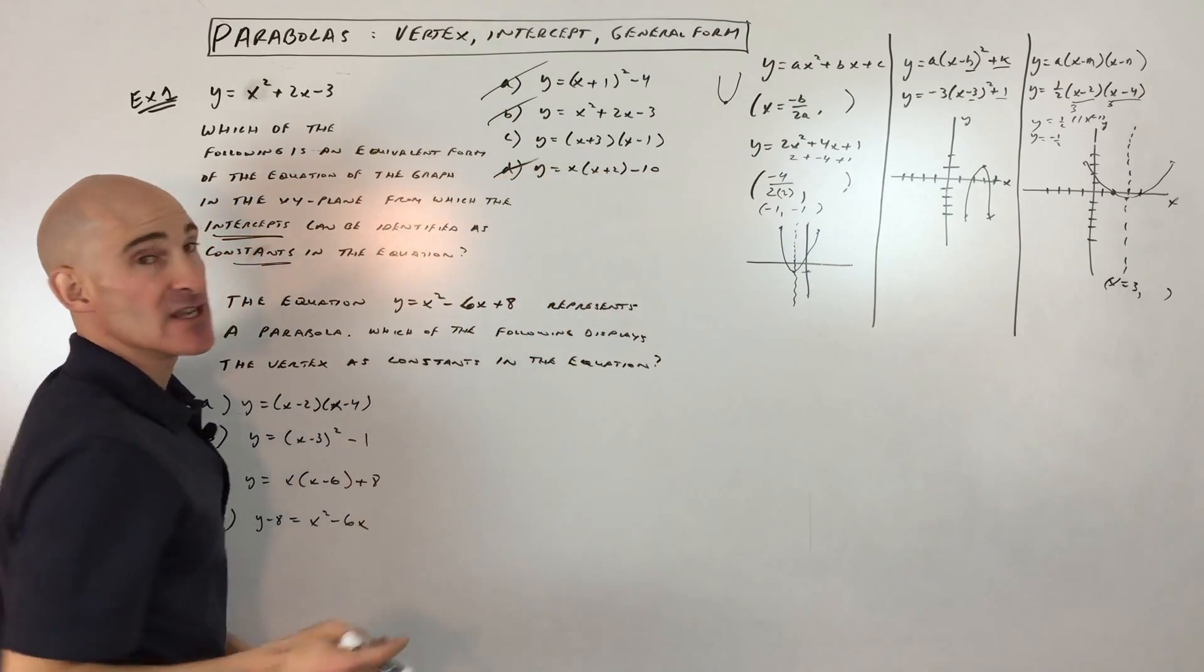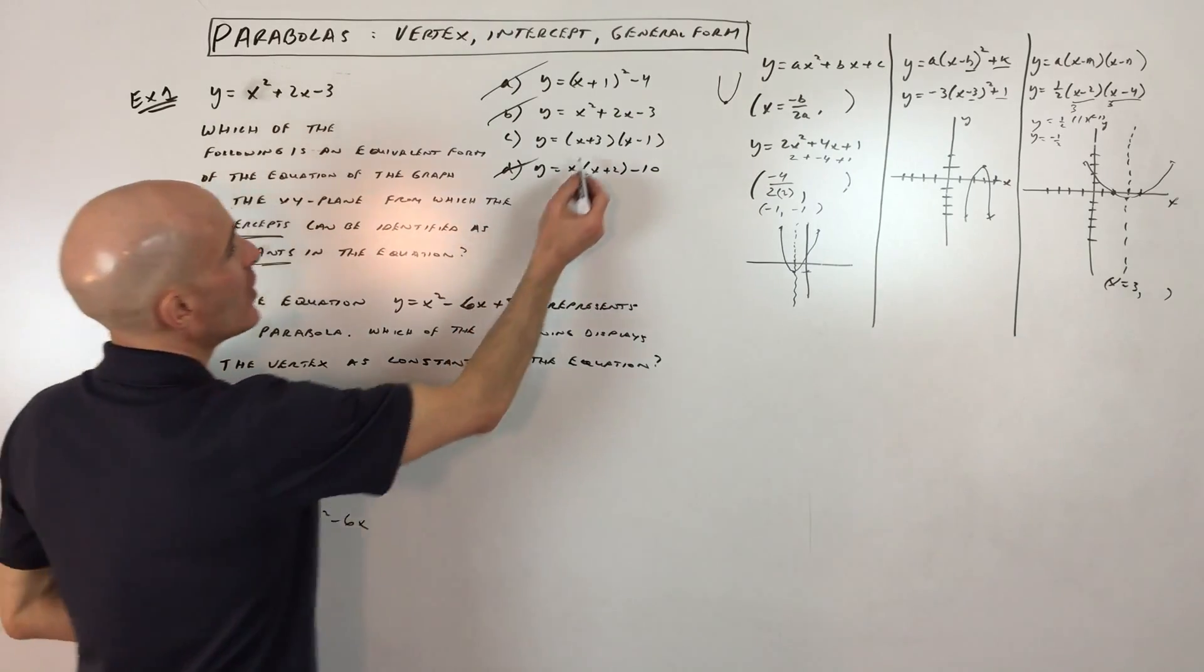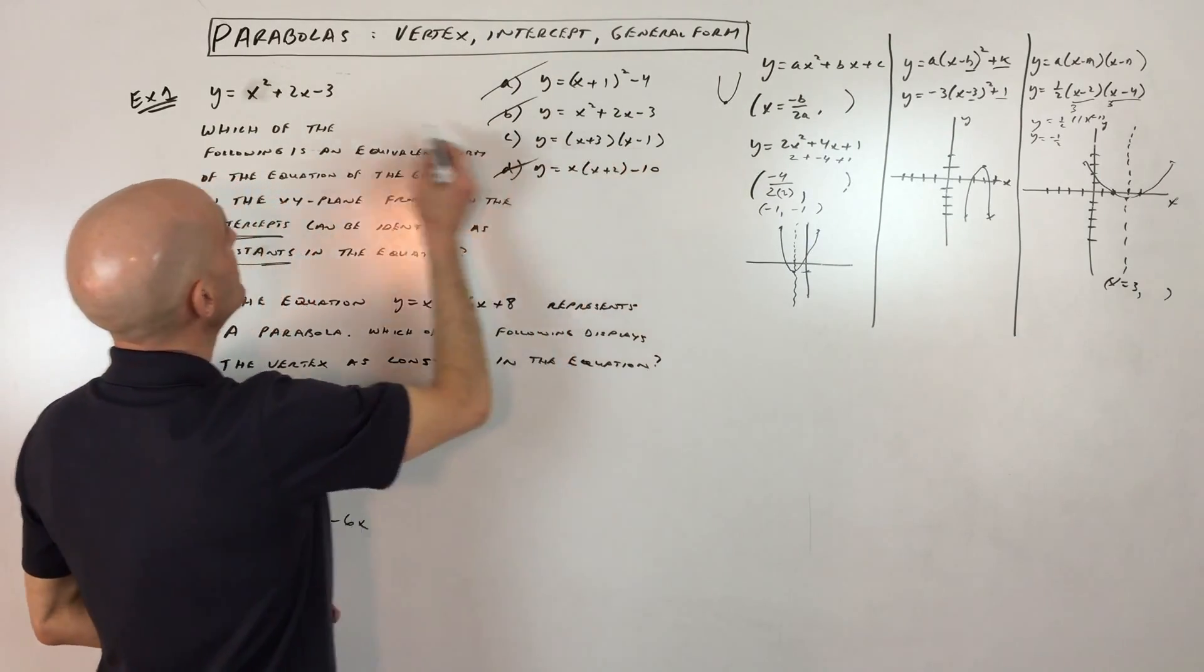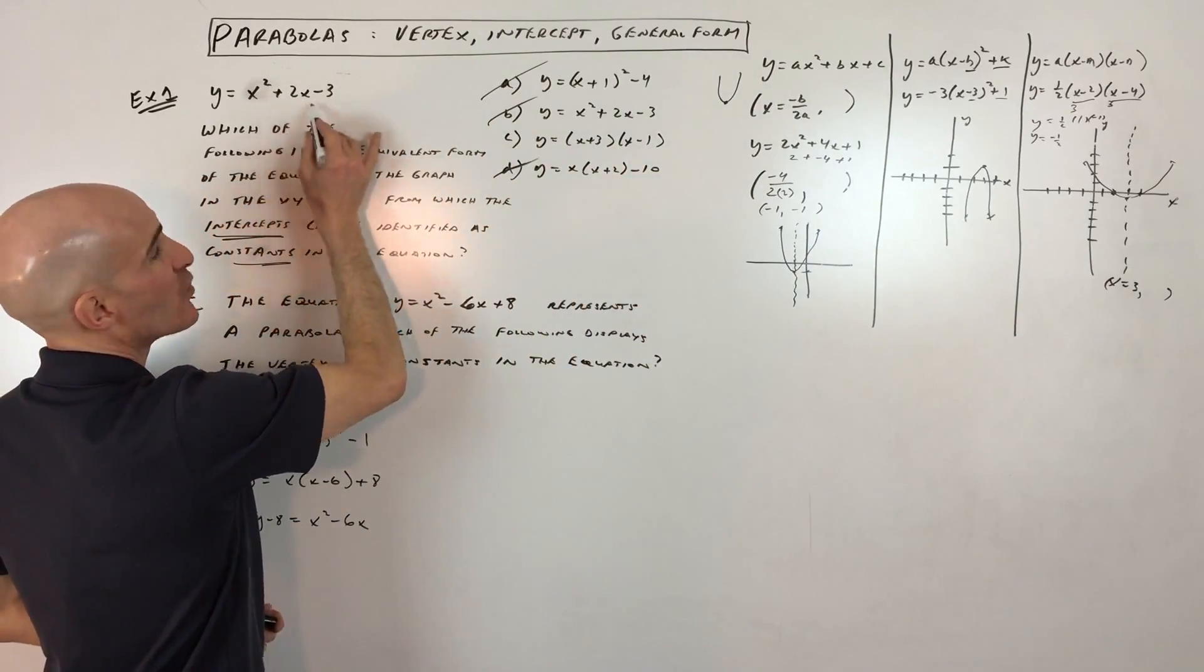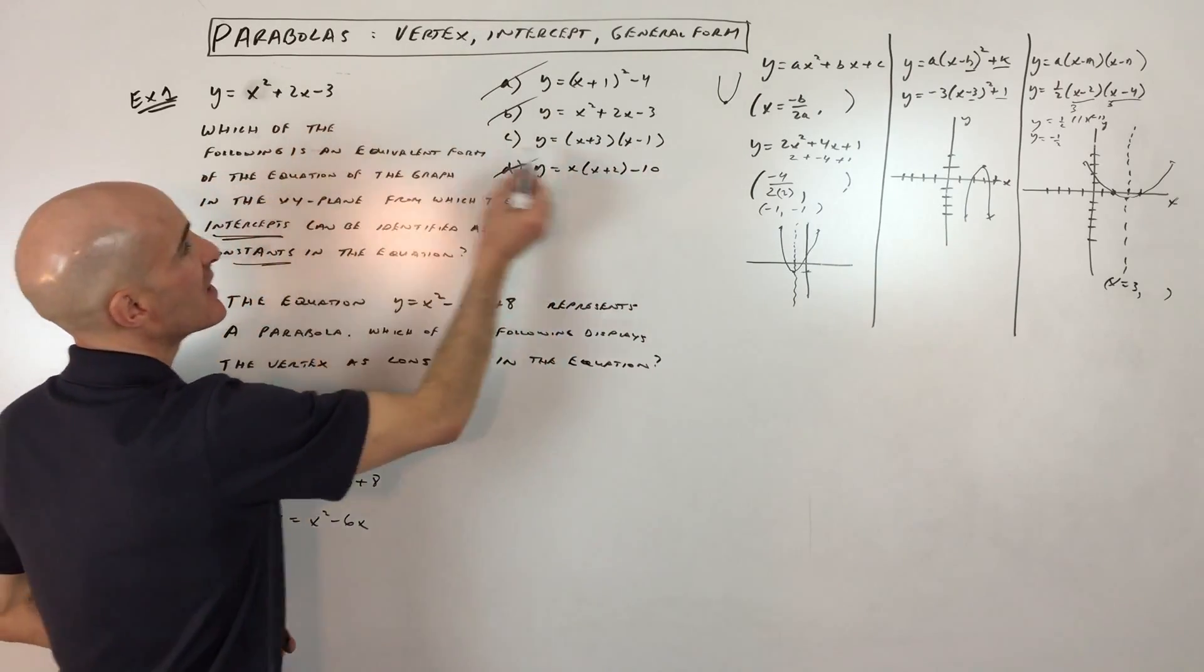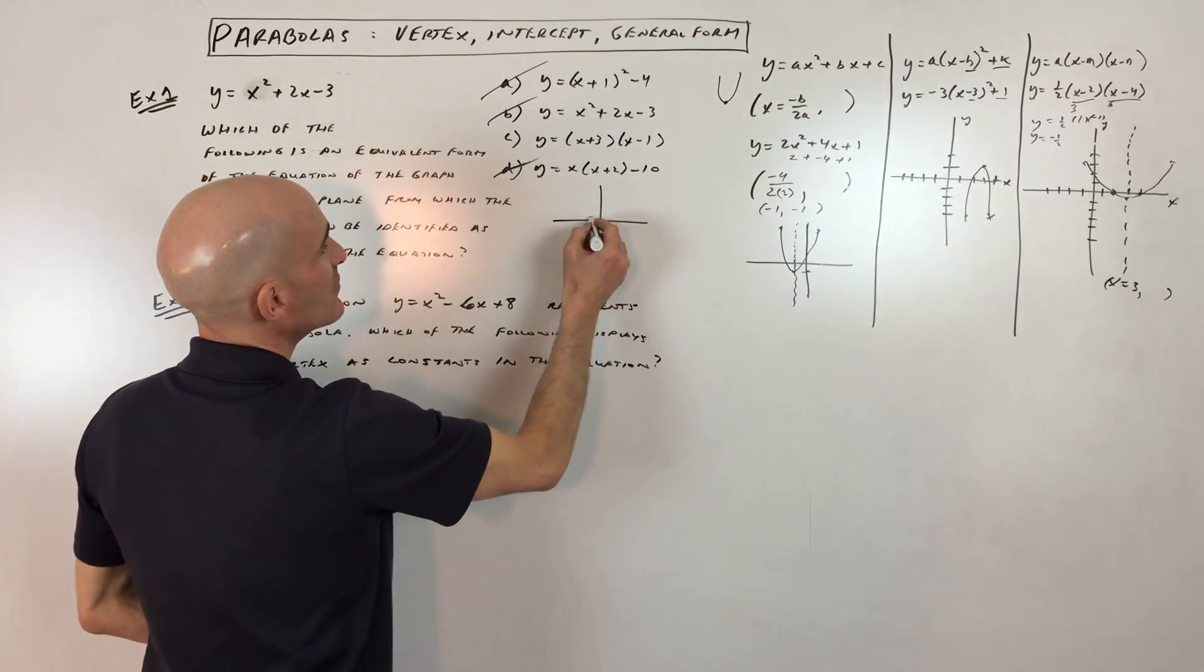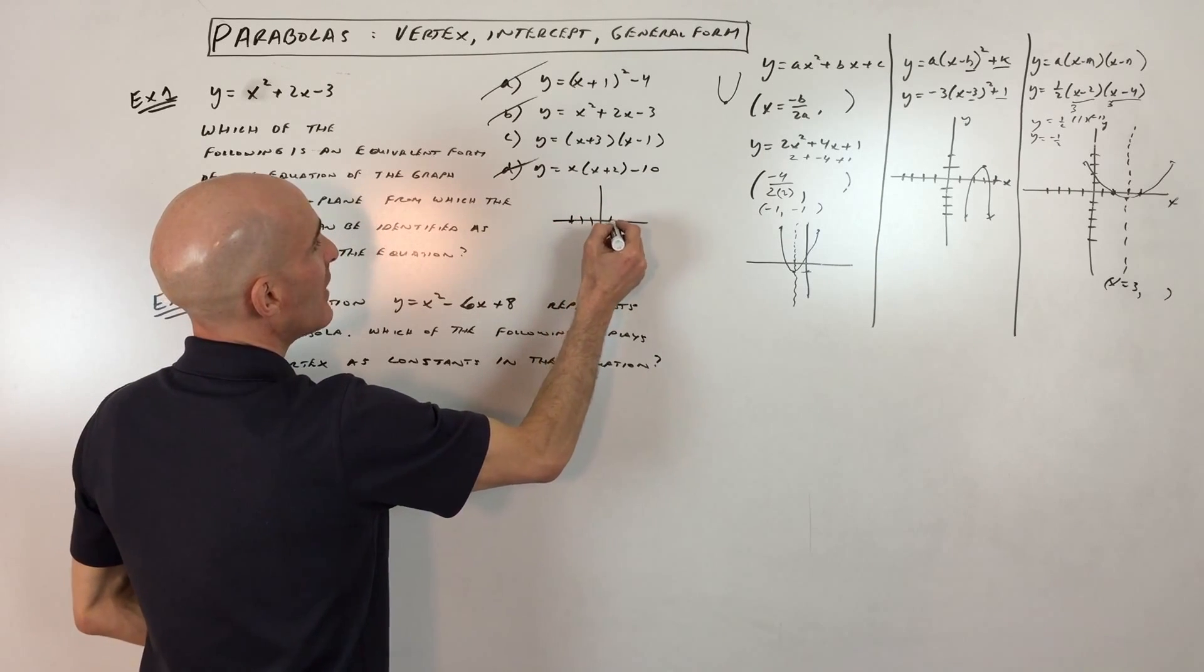It has to be letter C, but I would verify it by doing a couple things. You know, one, you could foil this out, like multiply it out, and you can see that, yes, it does match this one here. So all it is, is this is the factored form of this, and you can see the x-intercepts are going to be at negative 3, positive 1.